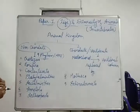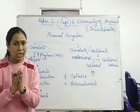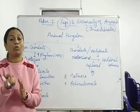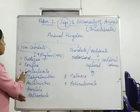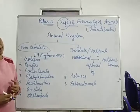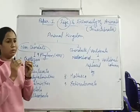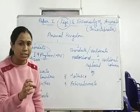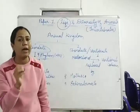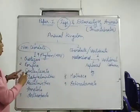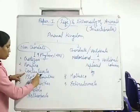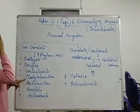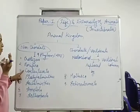For the third phylum, Coelenterata, these are animals where cells have been modified into tissues. Tissues mean a group of cells which are the same in structure and function — that is called a tissue. So tissue-grade of organization starts in Coelenterata. Under Coelenterata comes Aurelia, that is jellyfish.